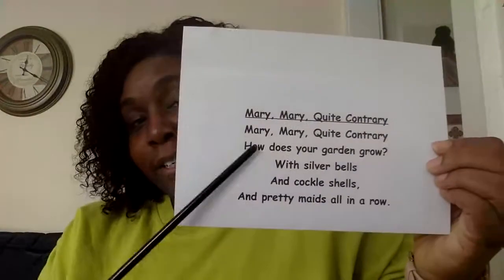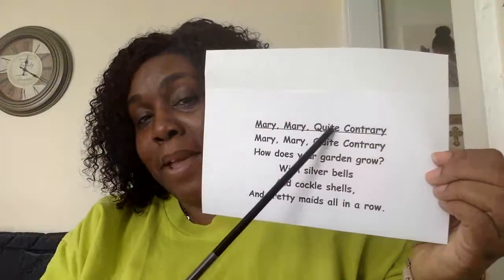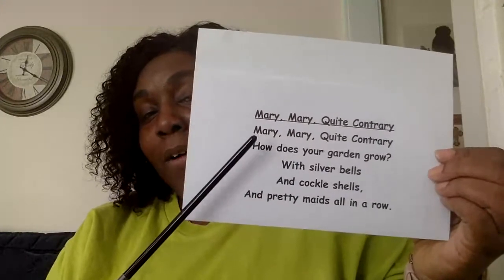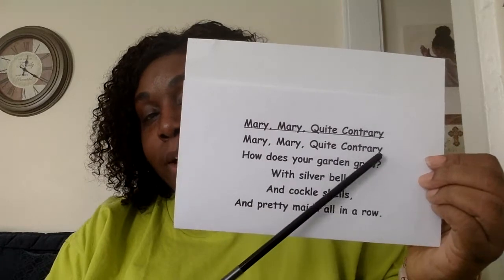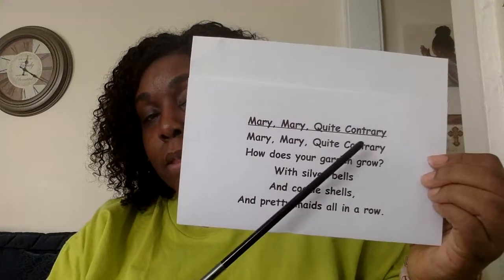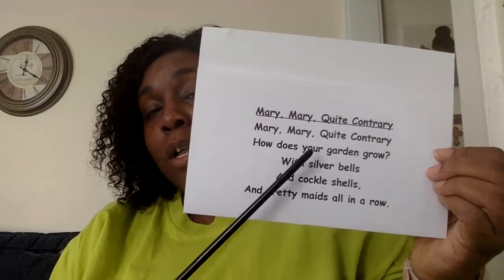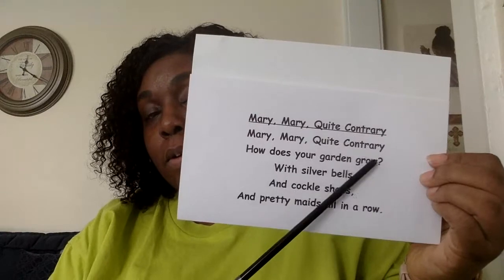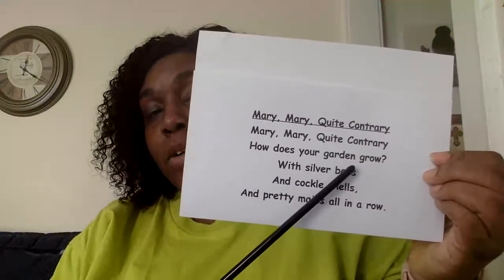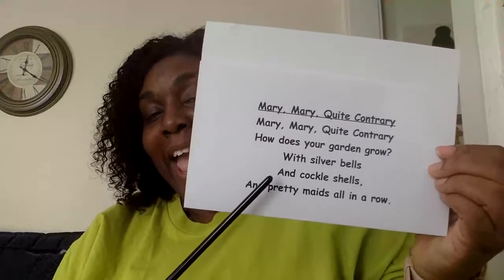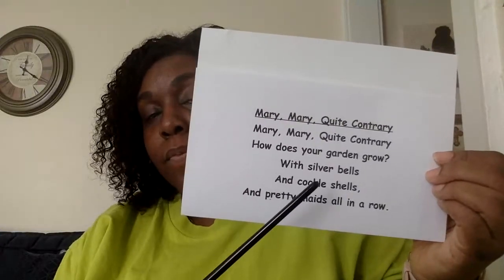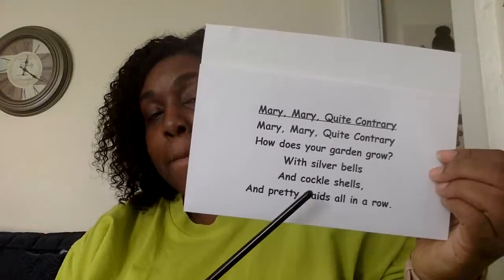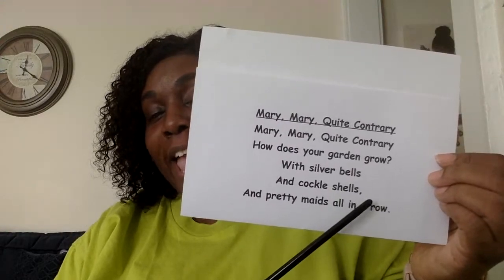All right. Today is merry, merry, quite contrary. Here's my paper. Here's my pointer. And the underlined part says merry, merry, quite contrary. And that is the title. So now I'm going to say it. Merry, merry, quite contrary. Now your turn. How does your garden grow? With silver bells. And cockle shells. And pretty maids all in a row.